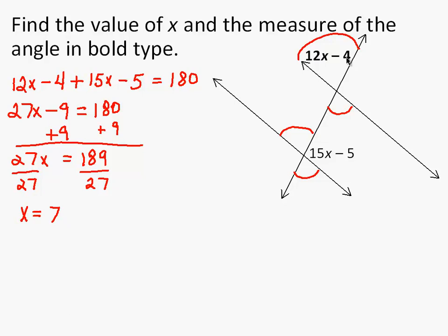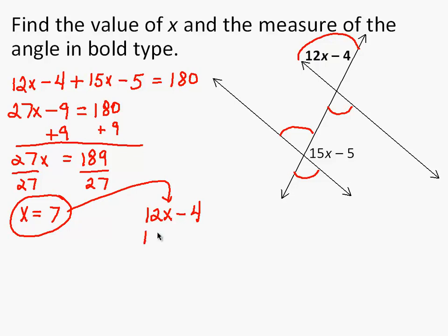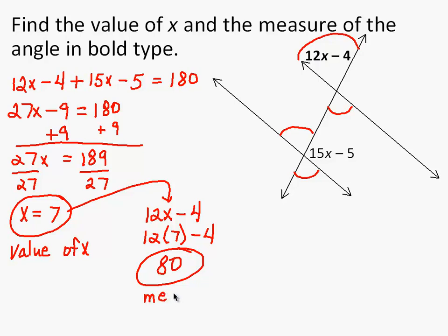Now the angle I was asked to find the measure of is 12x minus 4. With x equals 7, I have 12 times 7 minus 4. 12 times 7 is 84, and 84 minus 4 is 80. So x equals 7, and the measure of the angle is 80 degrees.